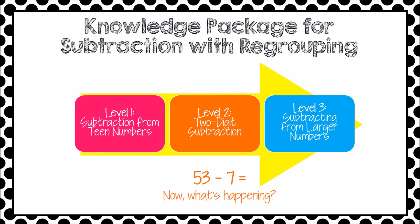At level two, the ten that needs to be decomposed is grouped within several other tens. First, we need to split that ten from the others. So instead of saying 50, now we are looking at it as 40 and a ten. Then we need to change that ten to 10 ones. Four tens and 13 ones still has the same value as five tens and three ones — it just looks different so we can easily subtract. In other words, at level two, there is a split and a change: split a ten from the other tens, then change it to 10 ones.